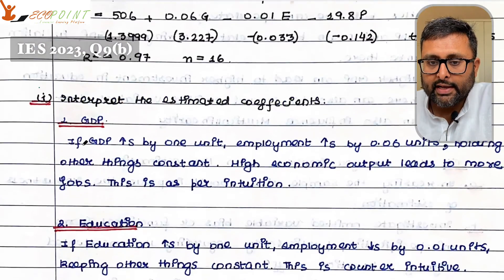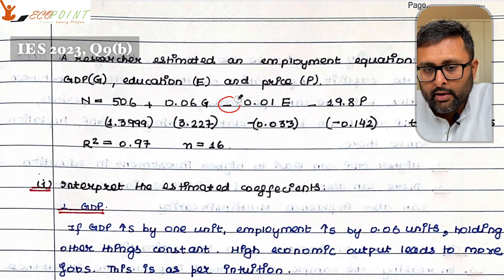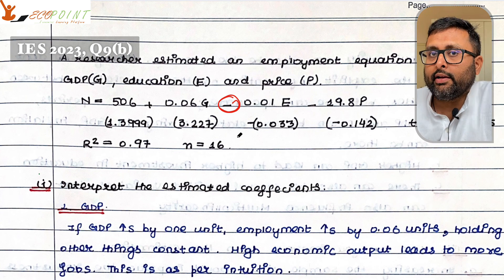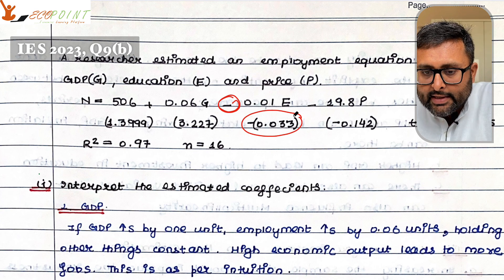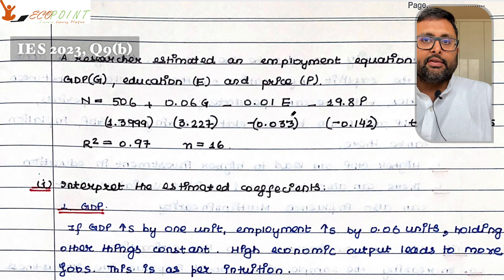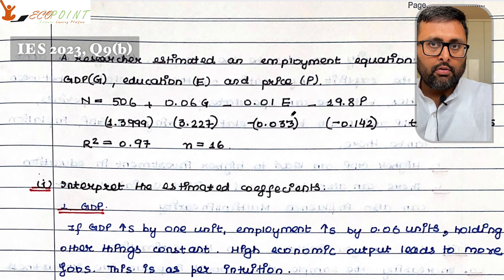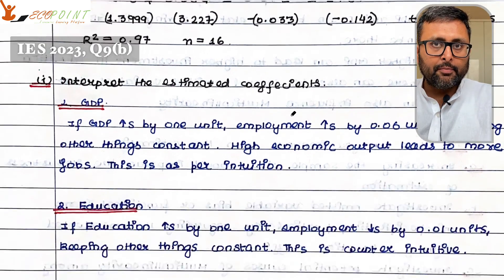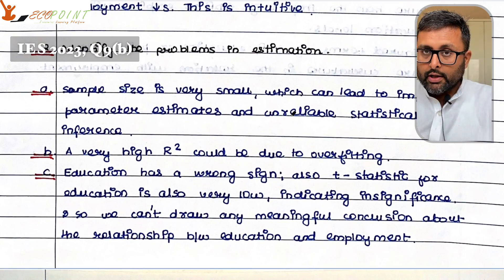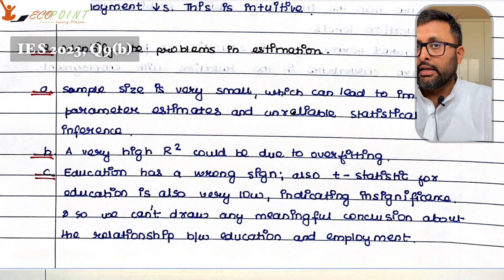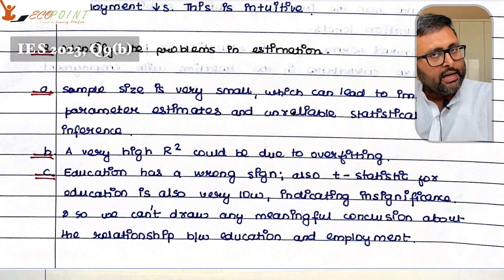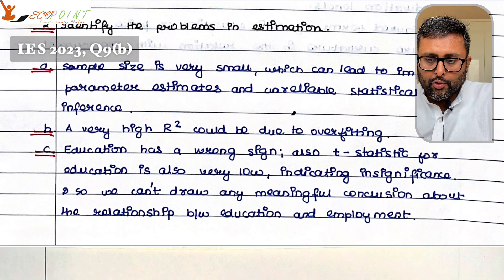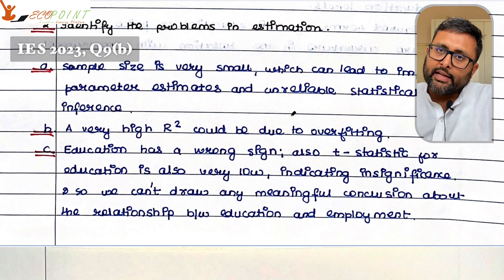Then there is a problem with the education sign. One, it has a wrong sign — this is not intuitive. That if education is going to increase, employment is going to decrease — this is not what you see. And then the t-statistic is very low. The rule of thumb is that if the modulus of the t-statistic is less than 1, that is insignificant. So you have a wrong sign and a very low t-statistic, and you cannot draw any meaningful conclusions or inference between education and employment.